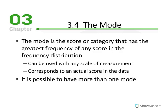There may be several scores with the highest frequency. Given the fact that the main function of measures of central tendency is to identify one value that best represents all the scores in the distribution, the mode may be a flawed value to illustrate central tendency, simply because there may be multiple modes.